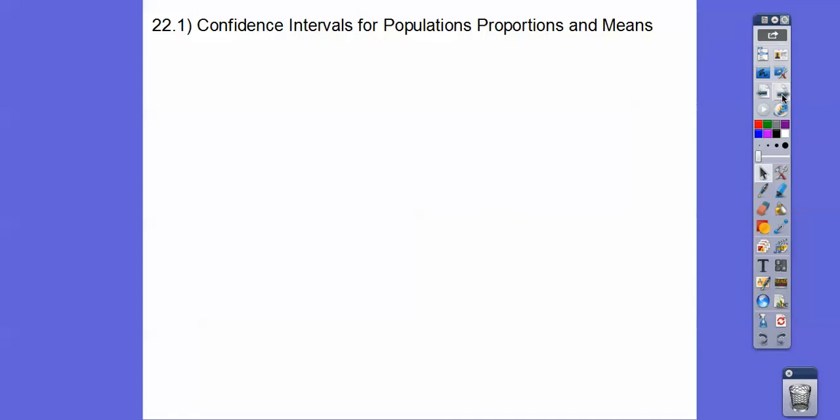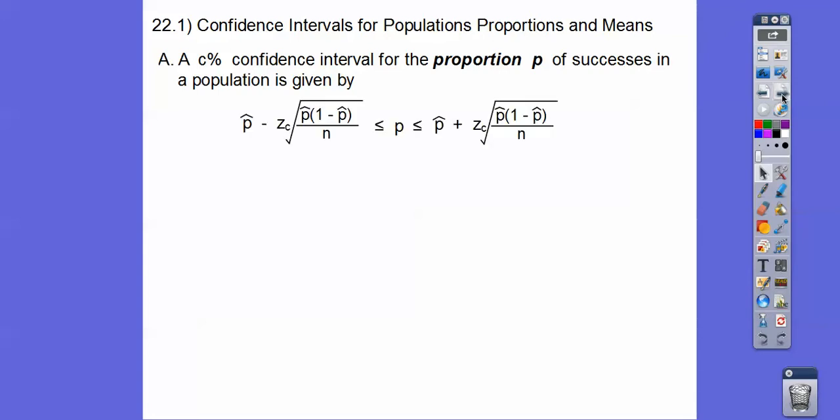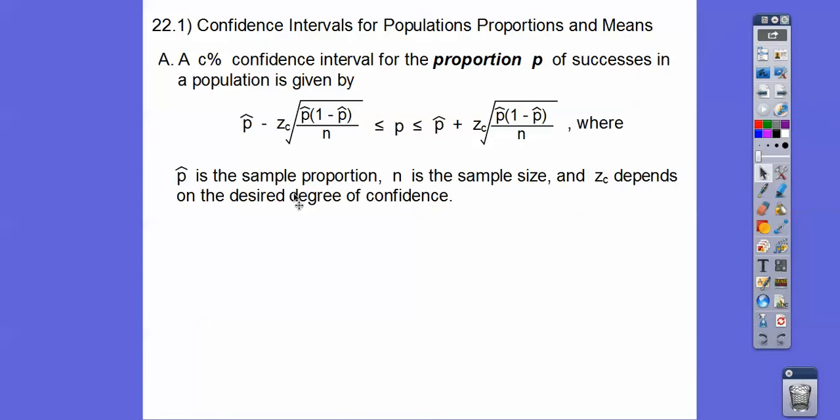Confidence intervals for population proportions and means. A C% confidence interval for the proportion P successes in a population is given by—don't let that formula scare you. P hat, this is what this is called. P hat is your sample proportion.